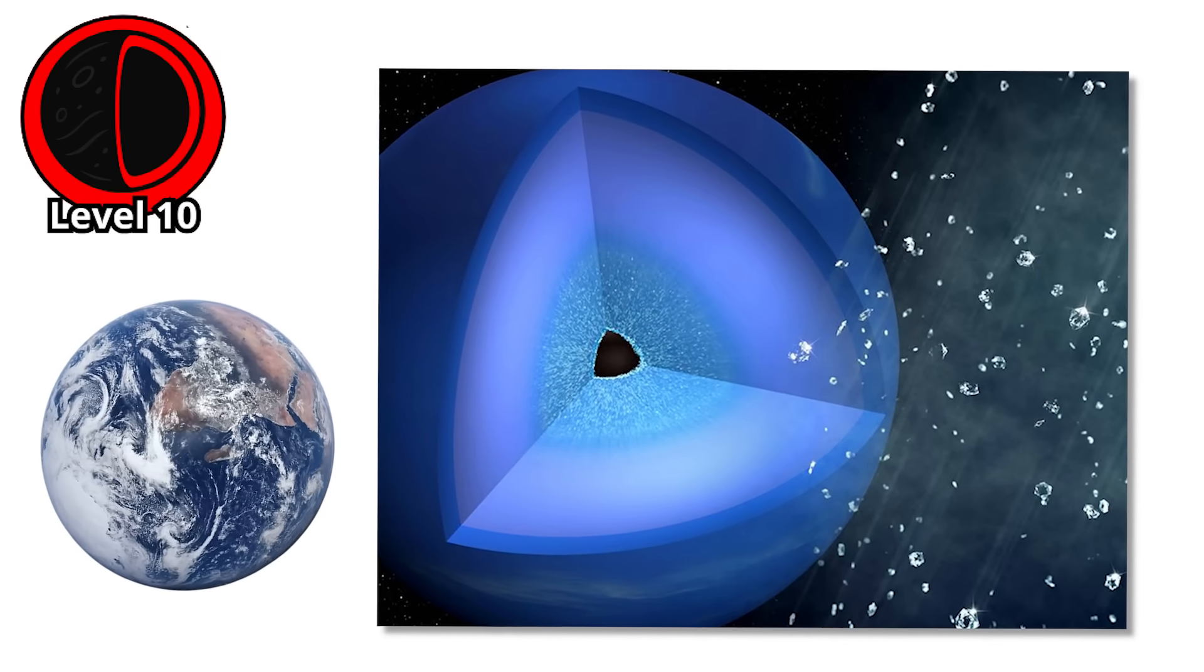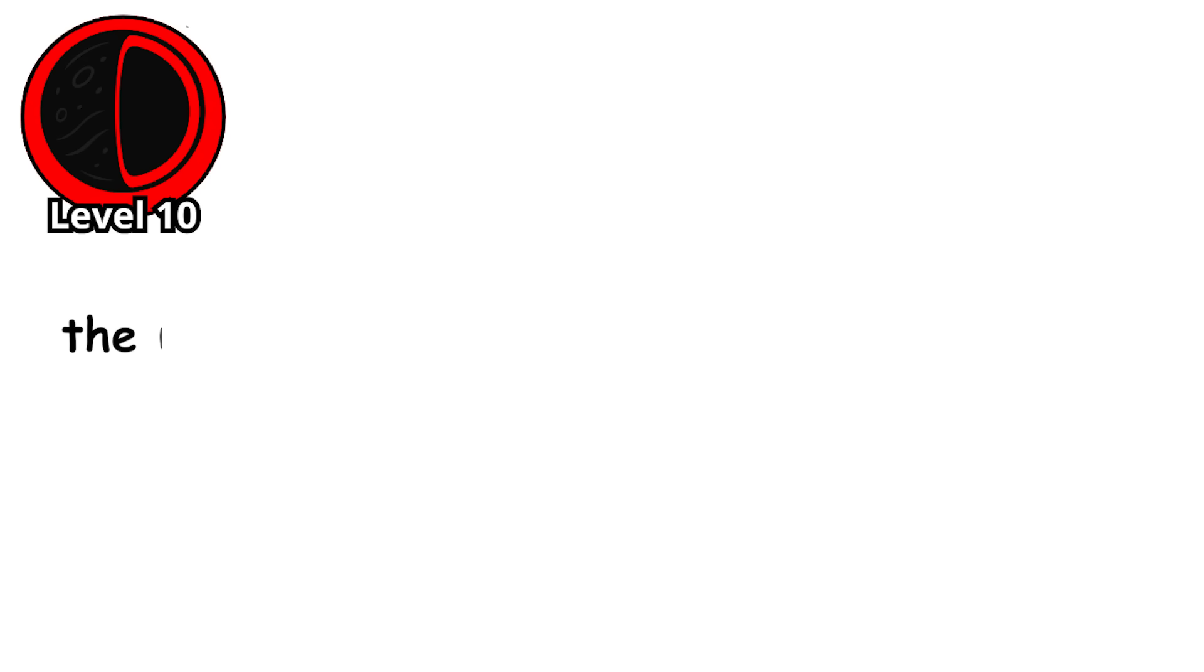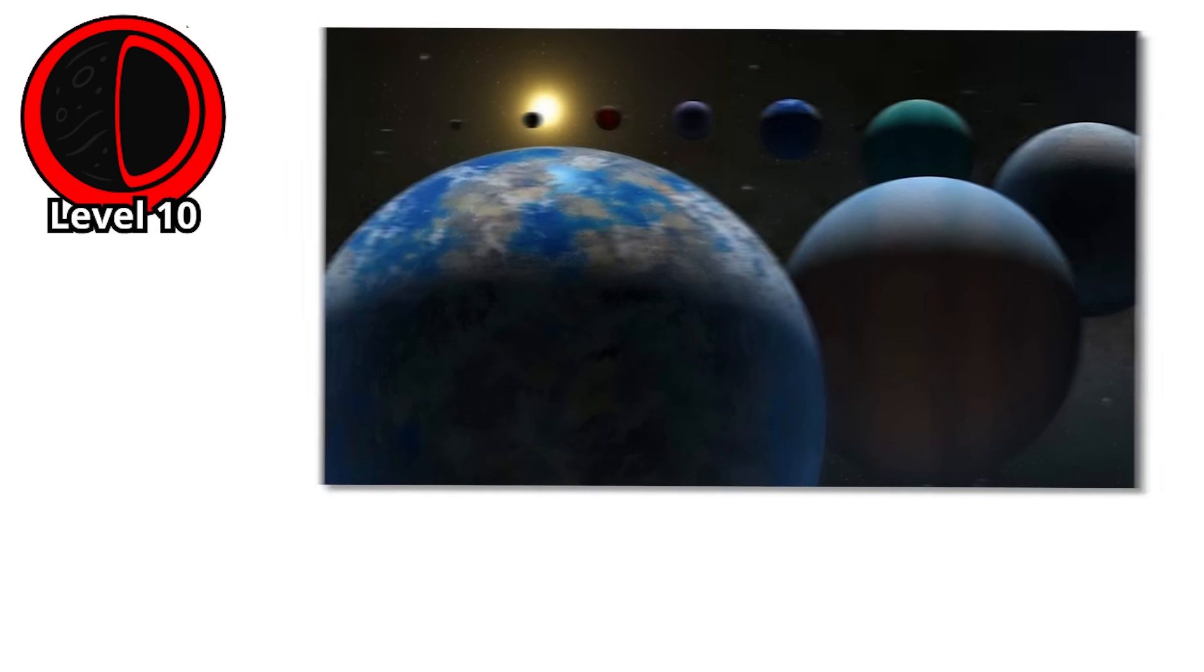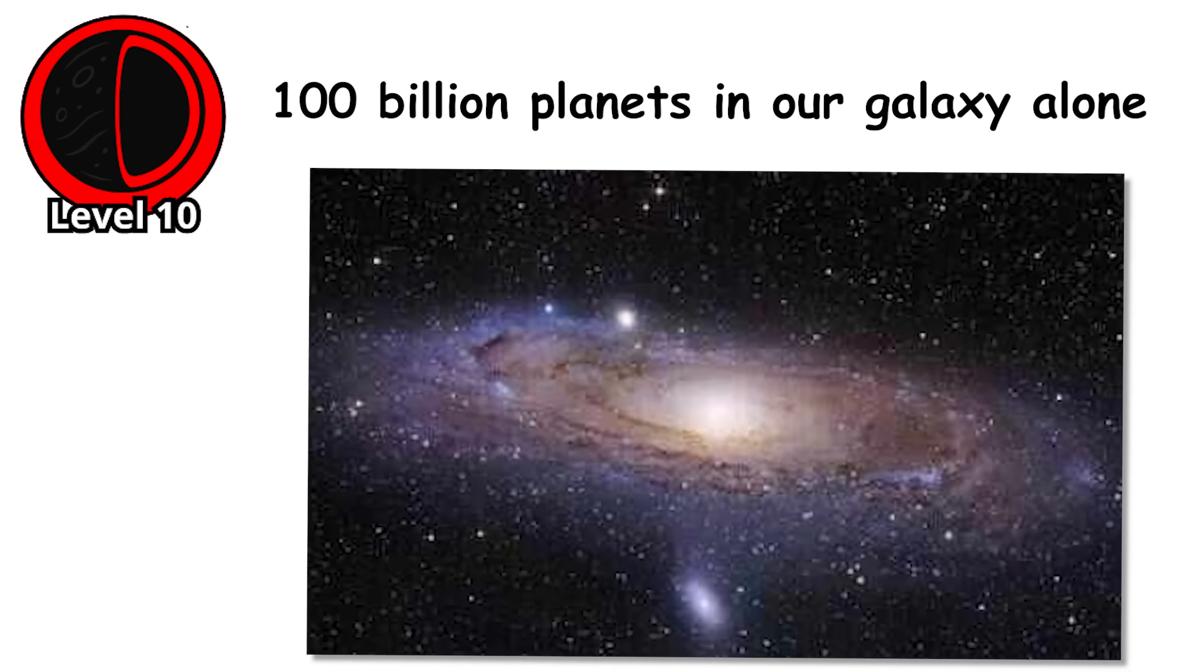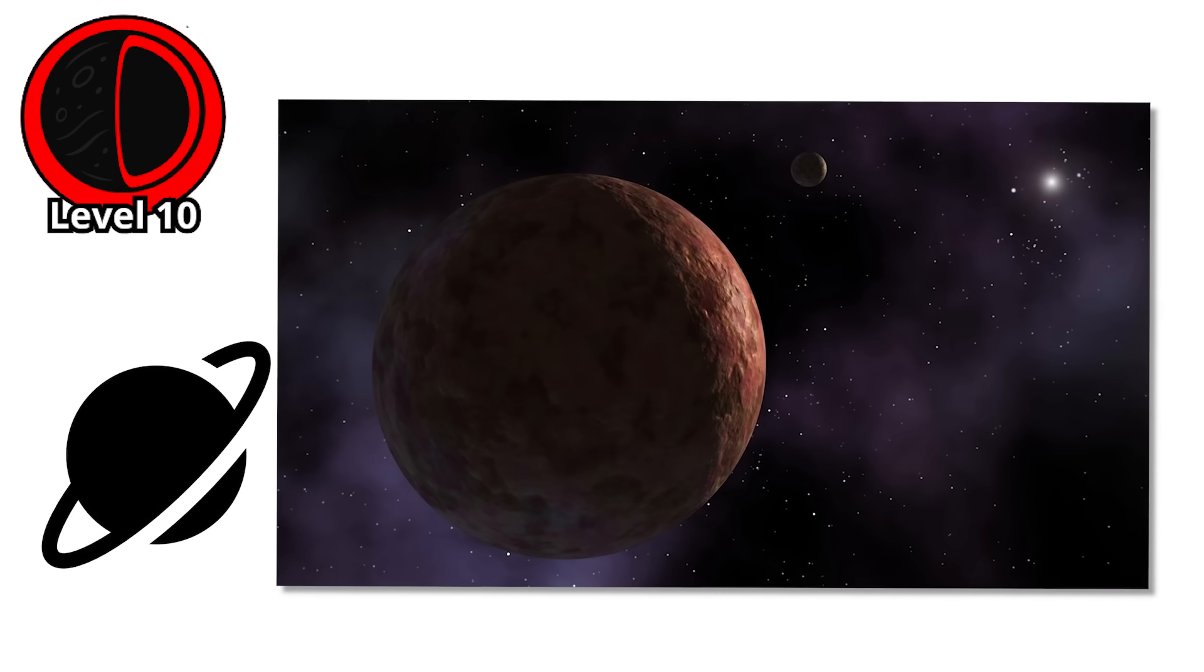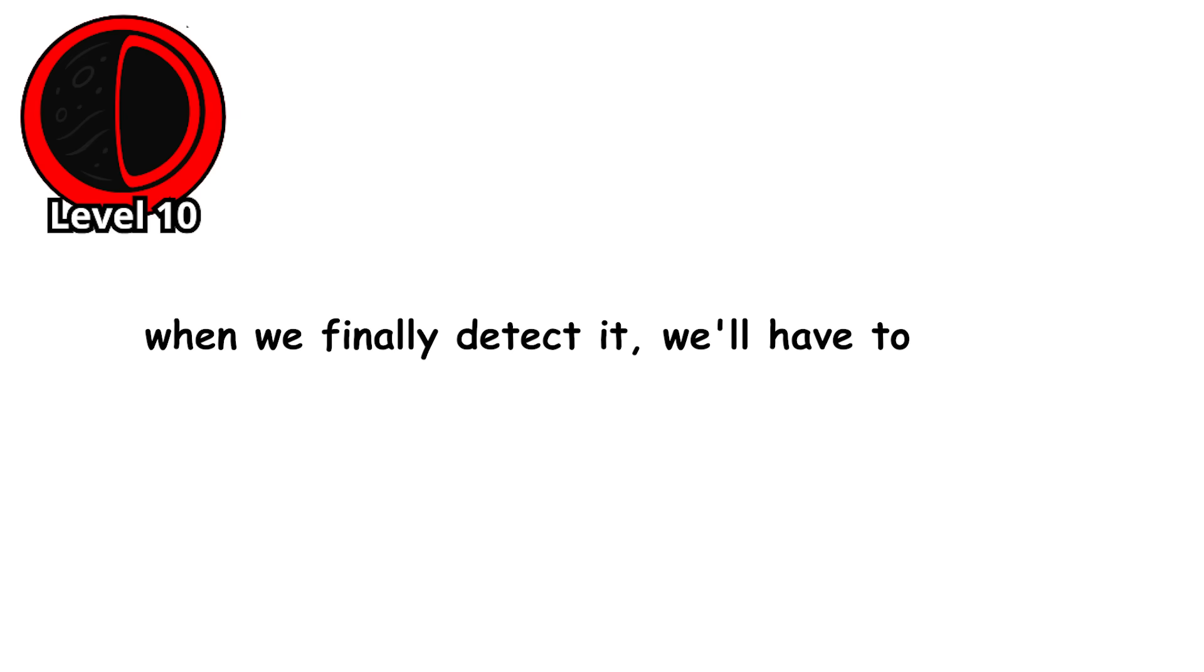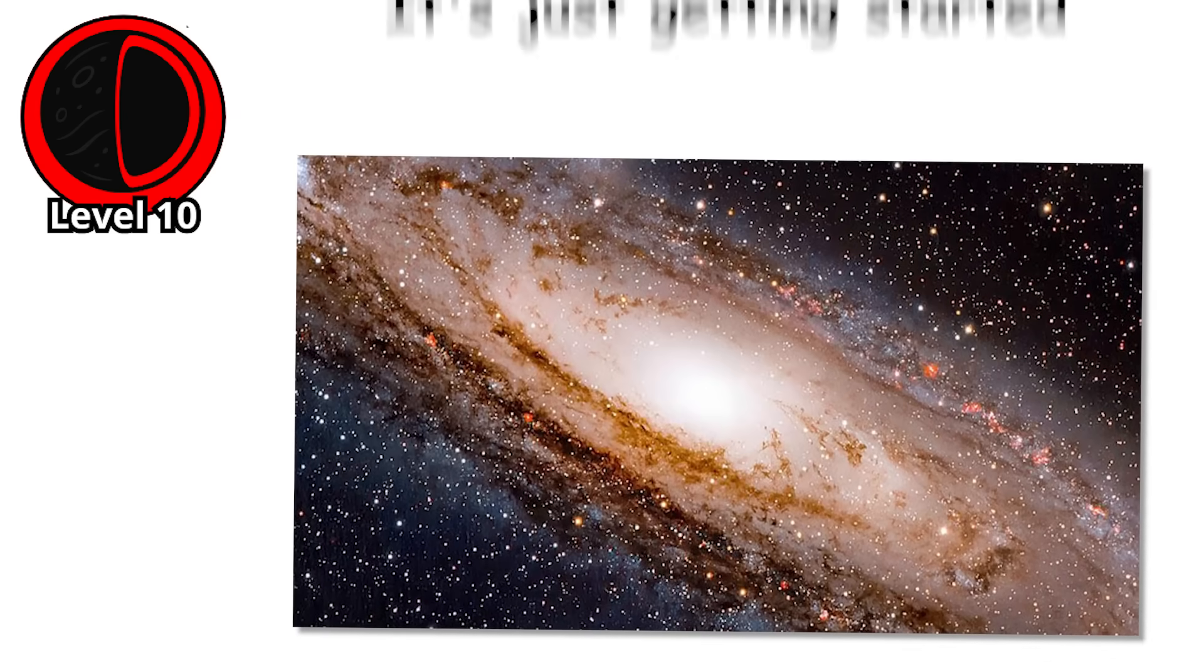From the familiar rocks of Earth to diamond rain on Neptune, from rogue planets wandering the void to worlds orbiting dead stars, the universe has created a diversity of worlds that exceeds anything our ancestors imagined. And here's the thing - we've only discovered about 5,000 exoplanets so far. There are an estimated 100 billion planets in our galaxy alone. We've sampled 0.0000005% of them, which means somewhere out there, there might be a planet type so strange, so fundamentally different from anything on this list, that when we finally detect it, we'll have to invent entirely new categories just to describe what we're seeing. The universe isn't done surprising us, it's just getting started.